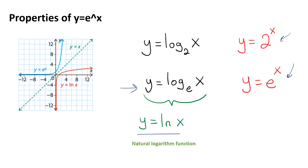The inverse relationship of eˣ and ln x is also shown on the graph. For example, while the domain for y equals e to the power of x includes all real numbers, the domain for the natural logarithm function requires x greater than zero. The range for y equals eˣ must be bigger than zero, but y equals ln x includes all real numbers as its range. We can also see that y equals eˣ has a horizontal asymptote at y equals zero, but y equals ln x has a vertical asymptote at x equals zero.